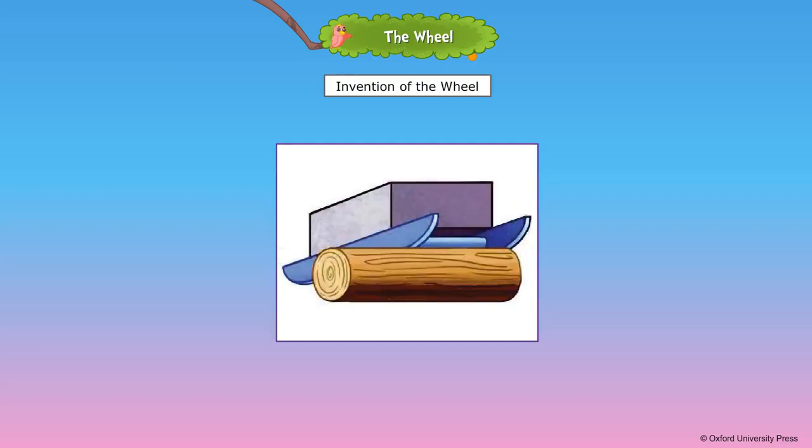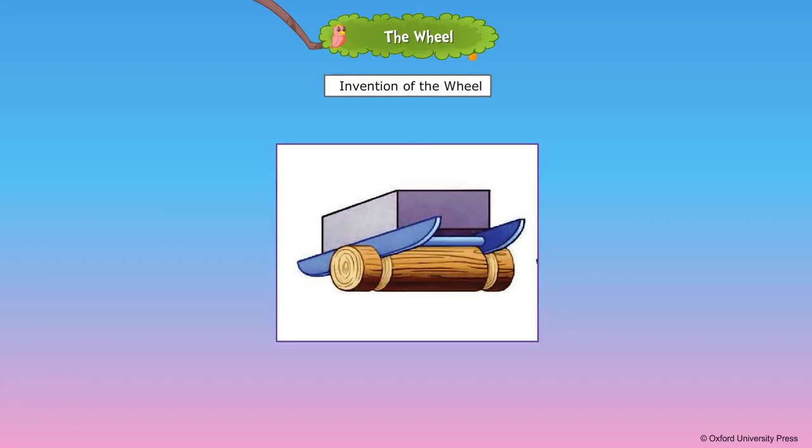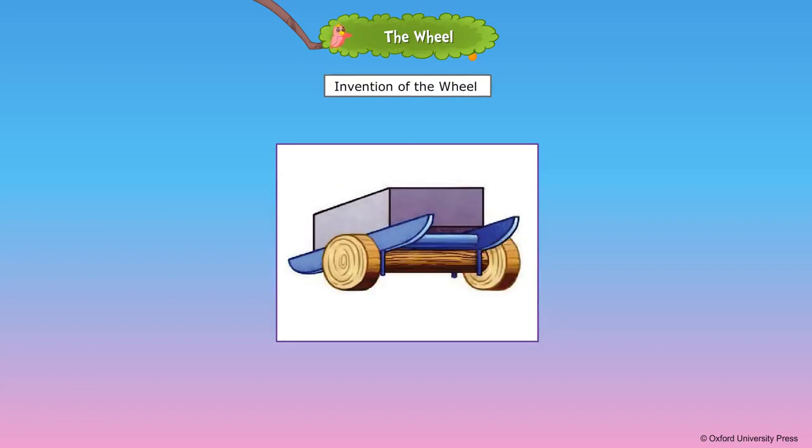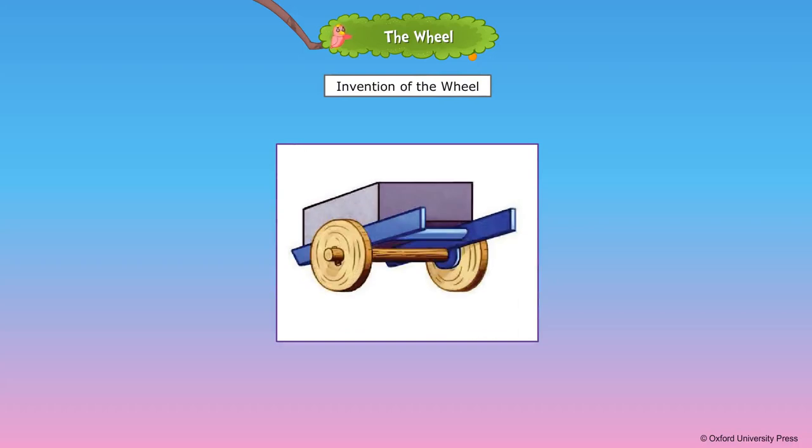Human beings combined the roller and the sledge. They made round discs from tree trunks and connected the centers of two discs with a long rod called an axle. The axle would have enabled the discs to rotate freely.